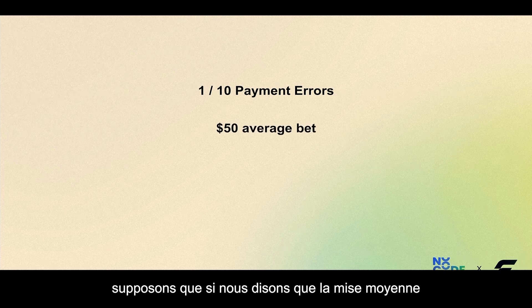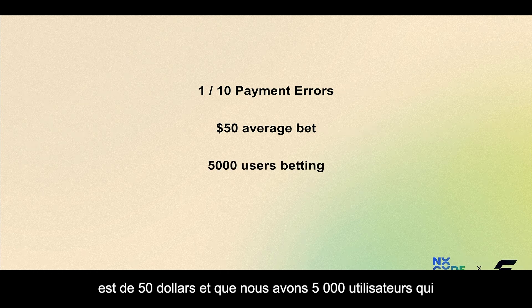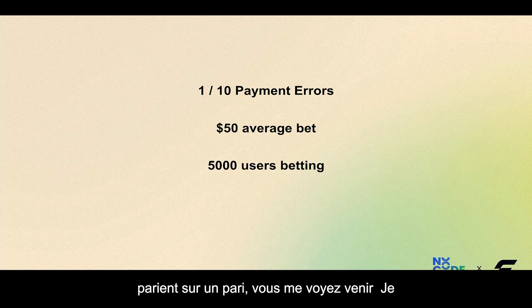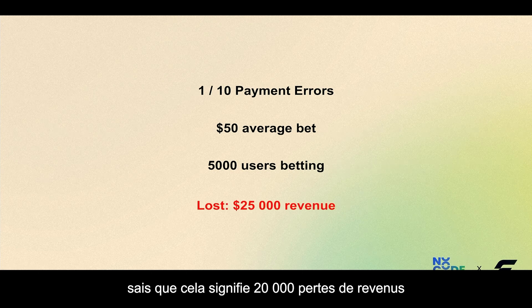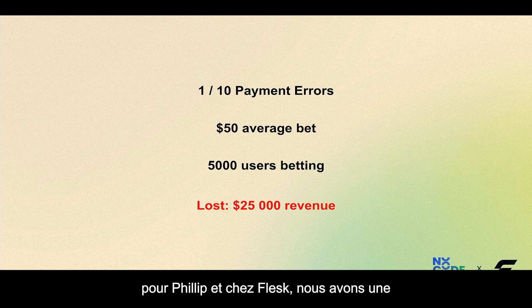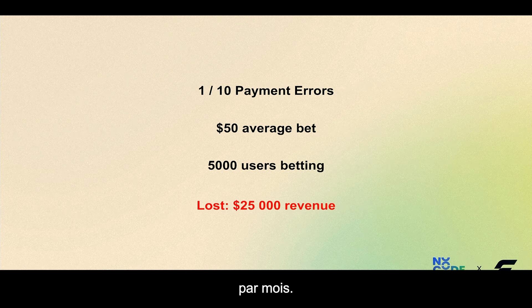Let's synthesize this. If we assume 1 out of 10 payments goes through an error — which is a lot, I admit, but let's suppose — and the average bet is $50 with 5,000 users betting, this means $20,000 lost in revenue for Philip. And we at Fluss have a solution for that, starting at only $30 per month.